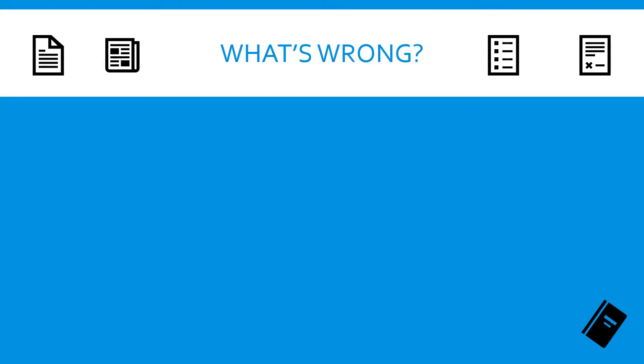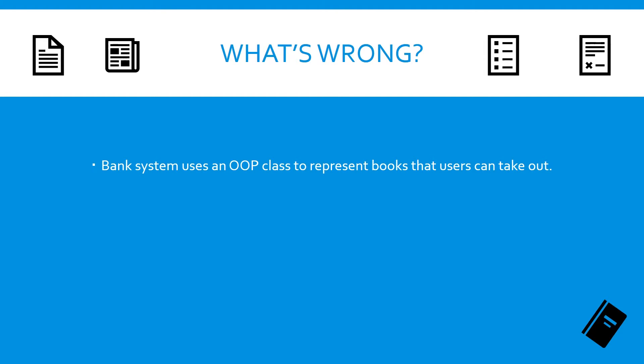Now you've had a chance to practice your OOP skills, let's put them to the test by fixing the bank system. The bank system uses an OOP class to represent the books that users can take out. This is a perfect situation to implement abstraction, because books are objects and they have attributes associated with them.